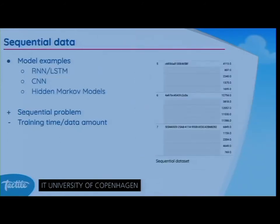By sequential data, I mean that for each user you have a sequence of features — for example, how much time they played on day one, day two, day three, and so on. Examples from literature include recurrent neural networks, LSTM structures, 1D convolutional neural networks, and hidden Markov models. This leverages the sequential nature of the problem but adds more data and training time.